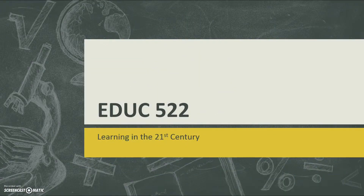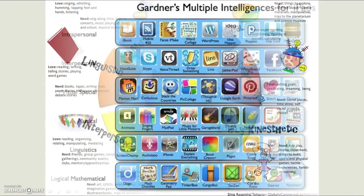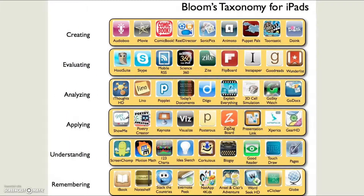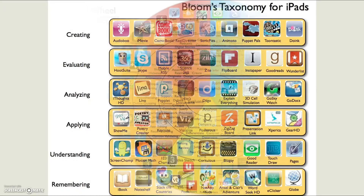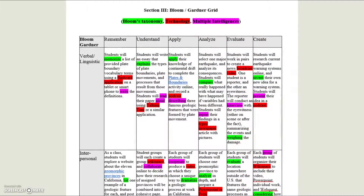In EDUC 522 Learning in the 21st Century, I gained a deep understanding of Howard Gardner's theory of multiple intelligences and connected each intelligence to mobile applications that address them. I also connected specific mobile applications to each level of thinking in Bloom's Taxonomy. For my final project, I created a four-week unit plan incorporating technology, multiple intelligences, and Bloom's Taxonomy to meet the needs of all learners.